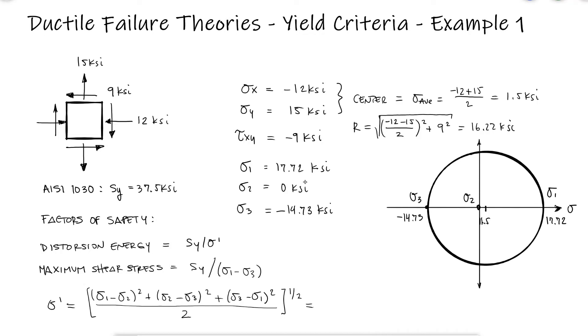With these values, the factor of safety for the maximum shearing stress theory is 1.156, the von Mises stress is 28.1 ksi, and therefore the factor of safety for distortion energy is 1.33. This is all we need,